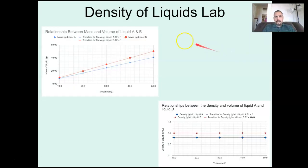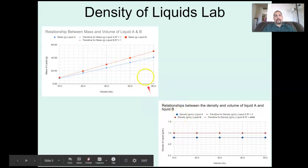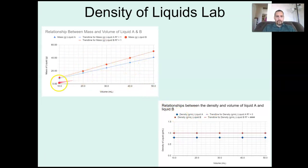So next thing, density liquids lab that we just finished up. This is what your two graphs should look like. You should have two different lines, one for liquid A and liquid B with volume versus mass. And what you should see here is as the volume is increasing, the mass is also increasing. That seems pretty straightforward.